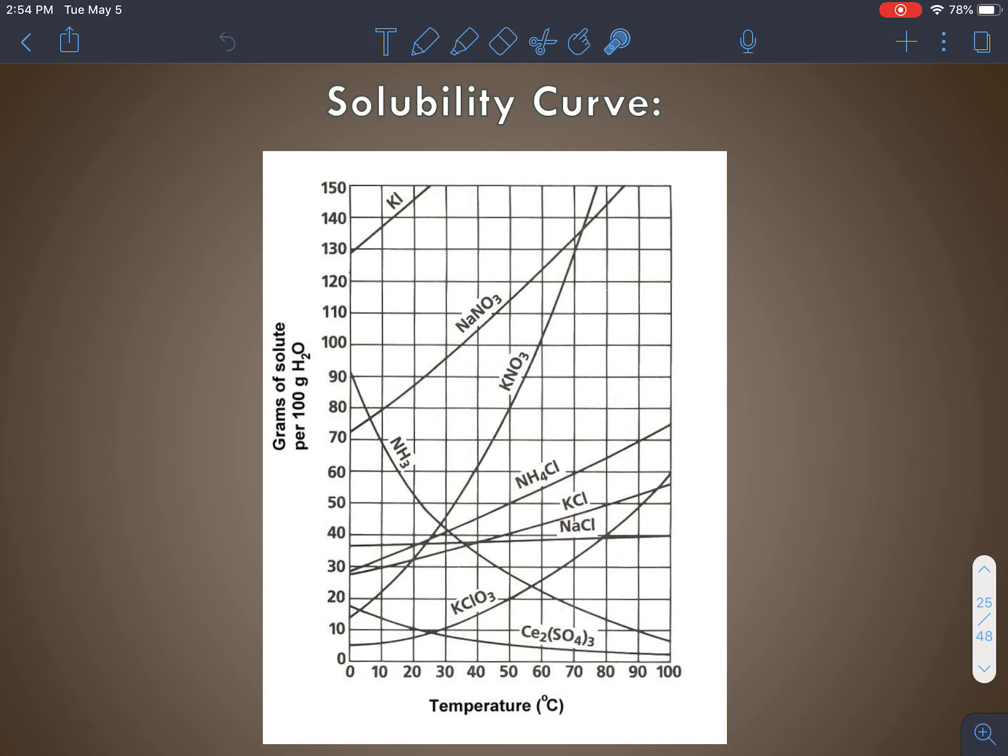The first thing I'd like to tell you though is that for each of these substances, so up here we have potassium iodide, we have sodium nitrate, potassium nitrate, ammonium chloride, and all these various substances.